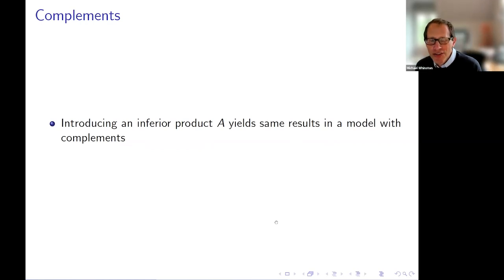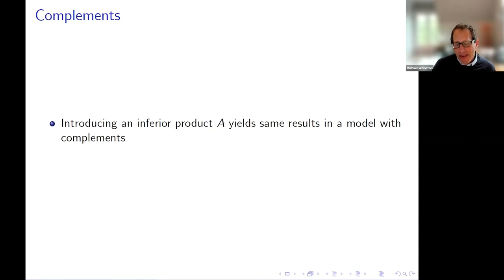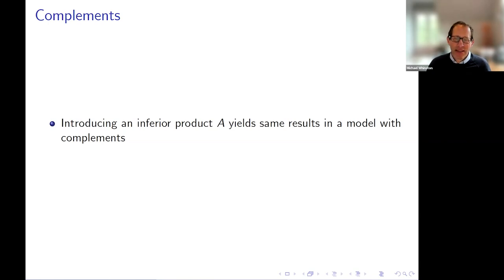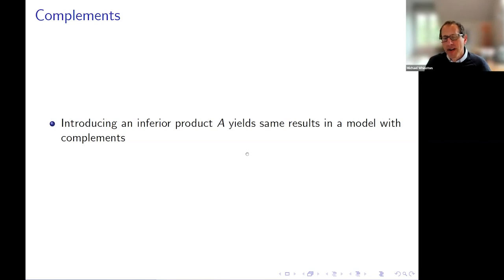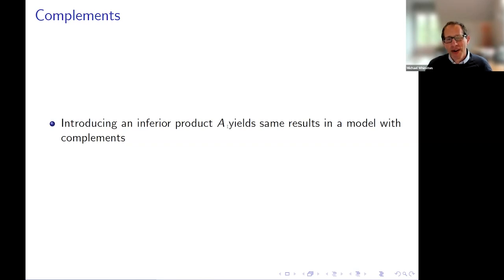The one slide on complements: what we show is that if you have an inferior product A, then everything I showed for independent products yields the same result in the case of complements — an A-B system where there's a less good product A relative to the monopolist. You can think of the less good product like this: before there was monopoly in product A but you could decide not to buy; now instead you could decide to buy this inferior product. That's how the complement case works in the paper.